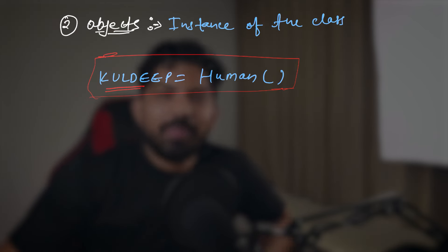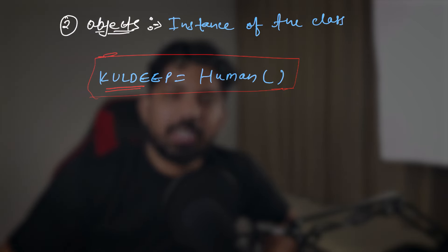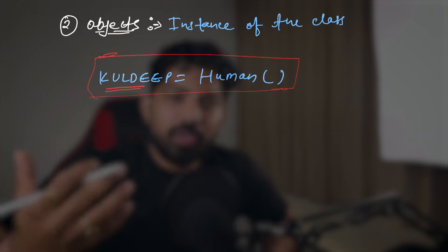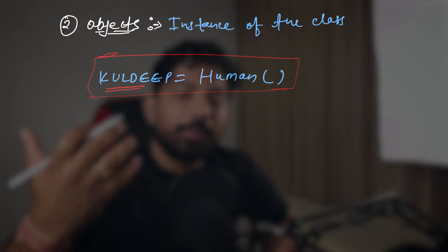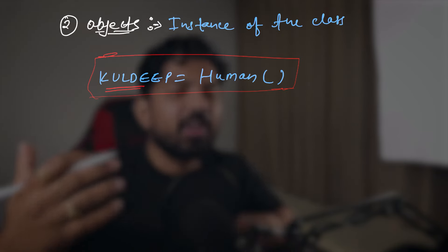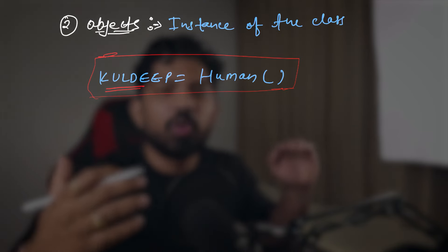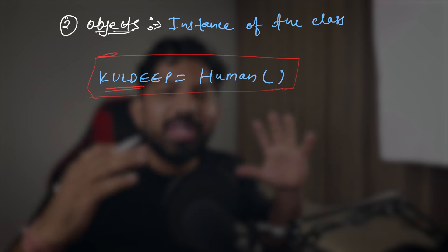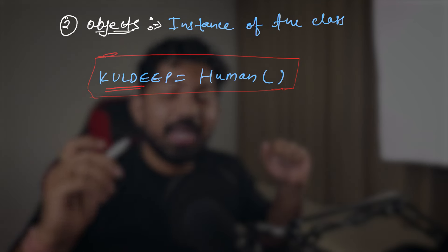So now you can understand the power of object-oriented programming: it helps us reuse a single code multiple times. Without OOP, like if God tried to create all human beings manually, it would be an absolutely hectic task.